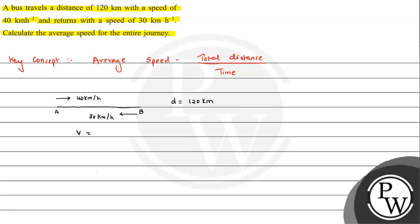If we look at the formula, total distance will be the actual path length traveled. So A to B goes first, and then B goes to A, so 120 plus 120. Total distance here will be divided by total time. Let's suppose we have time T1 and we have time T2.